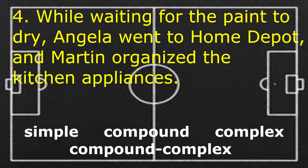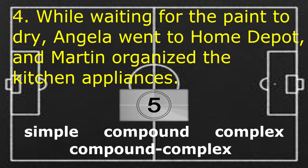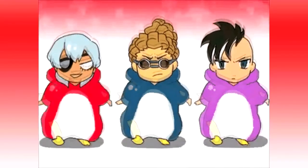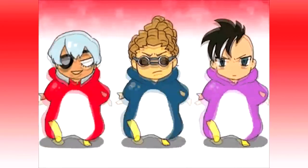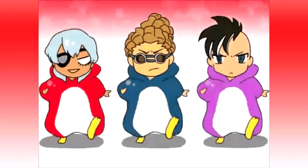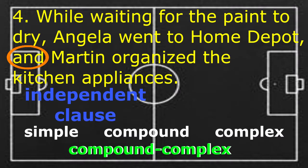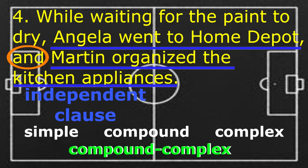Number 4: 'While waiting for the paint to dry, Angelo went to Home Depot and Martin organized the kitchen appliances.' If your answer is compound complex, then you are correct. The coordinating conjunction 'and' is your clue to identify the independent clauses: 'Angelo went to Home Depot' and 'Martin organized the kitchen appliances' are our independent clauses.